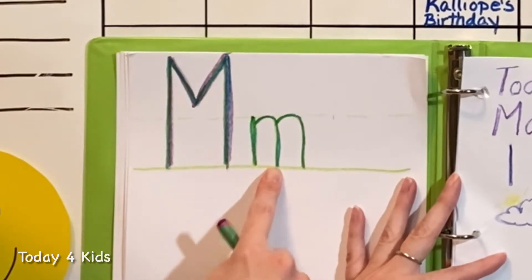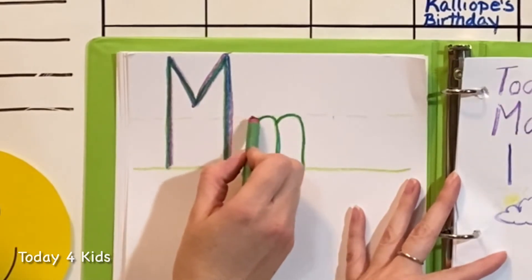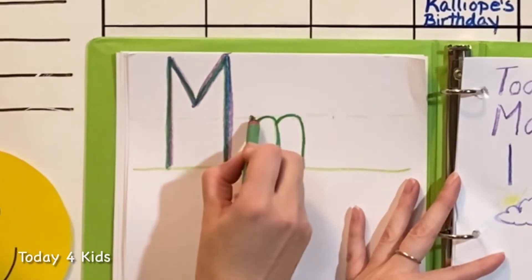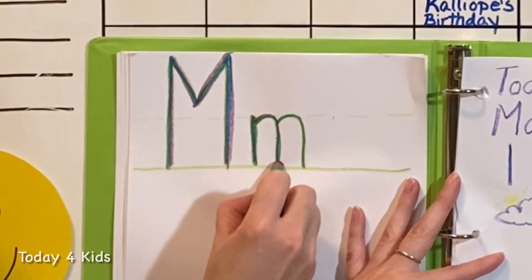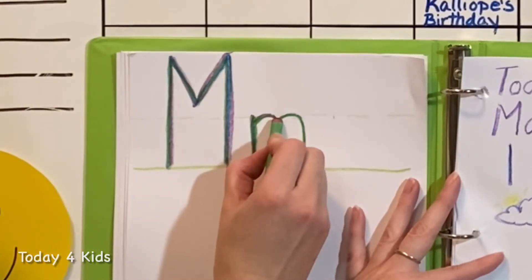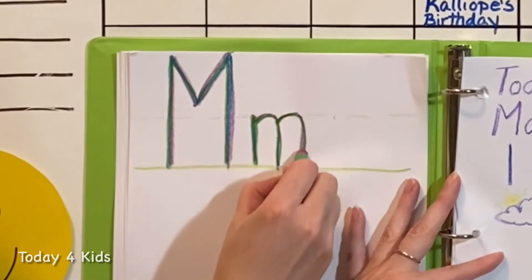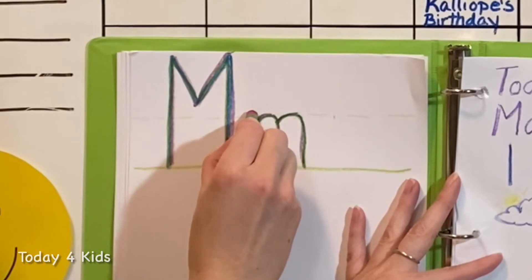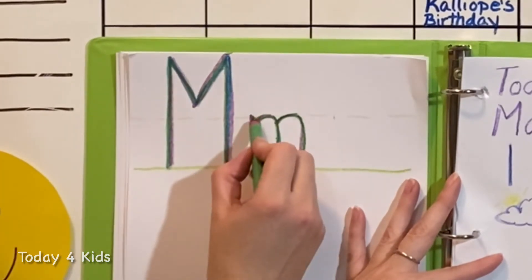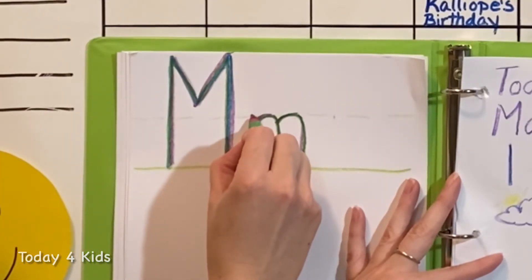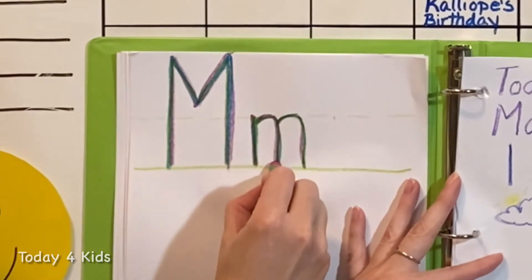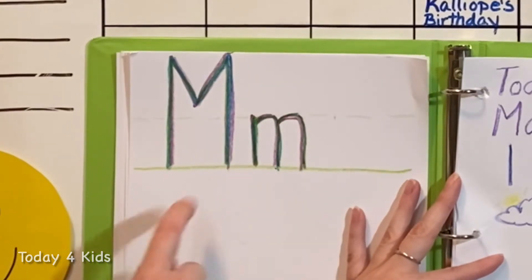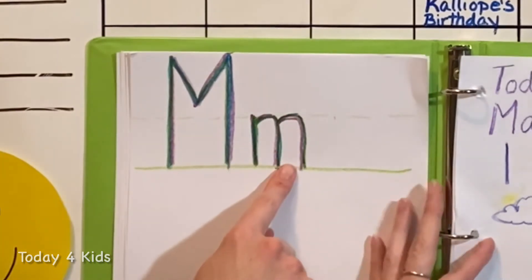Next we're going to make a lowercase M. So you start halfway up — it's half as tall as a big M. And you bring it down. Then you go almost all the way up to the top and you arch out and come down. Then come back up to almost the top again and arch out and come down. And you've made a lowercase M. Let's do that one more time. Start halfway up and strike it down, then come almost all the way to the top, curve out and down, then go back up to almost the top again and come out and down. Good job. So you've made an uppercase M and a lowercase M.